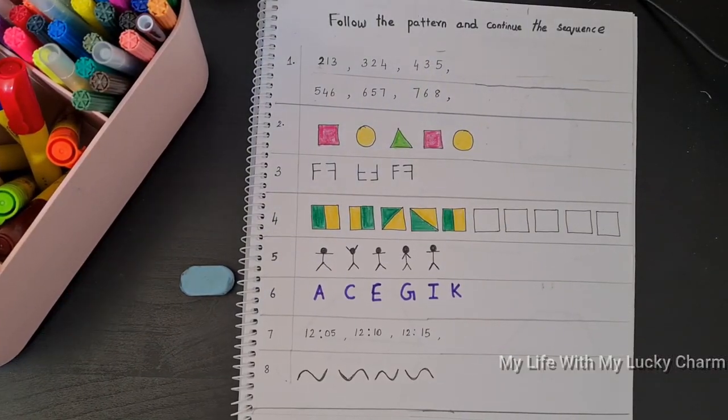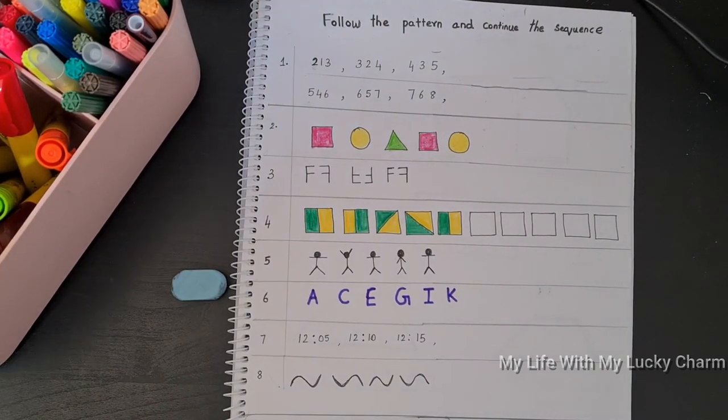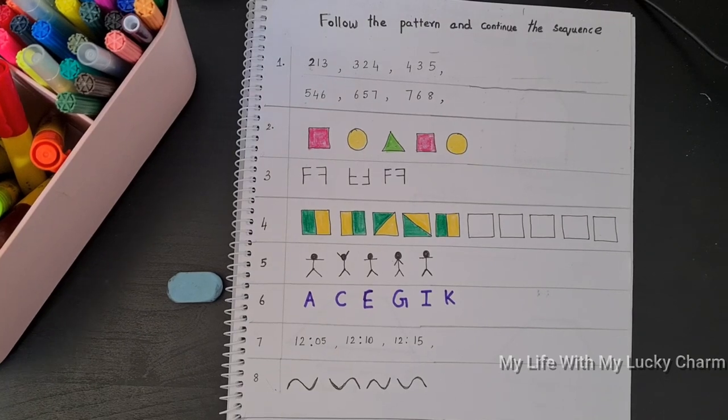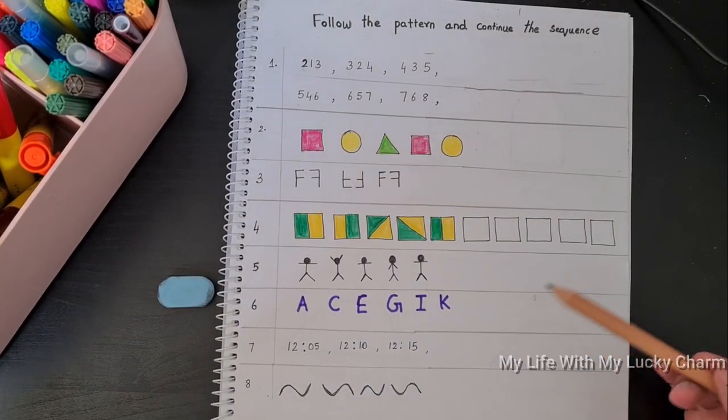So come, let's get started. The first activity is follow the pattern and continue the sequence. It's more like a usual pattern matching activity, but this time I have included a few numbers and alphabets based sequences just to see how he is going to work on it.